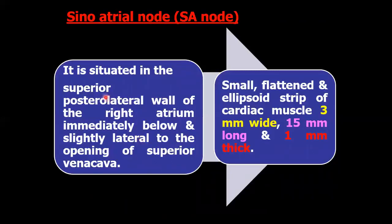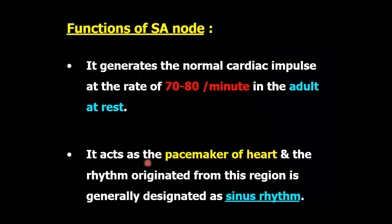The SA node is situated in the superior posterolateral wall of the right atrium, immediately below and slightly lateral to the opening of the superior vena cava. Functions of the SA node: it generates the normal cardiac impulse at the rate of 70 to 80 per minute in an adult at rest. It acts as the pacemaker of the heart, and the rhythm originated from this region is called sinus rhythm.